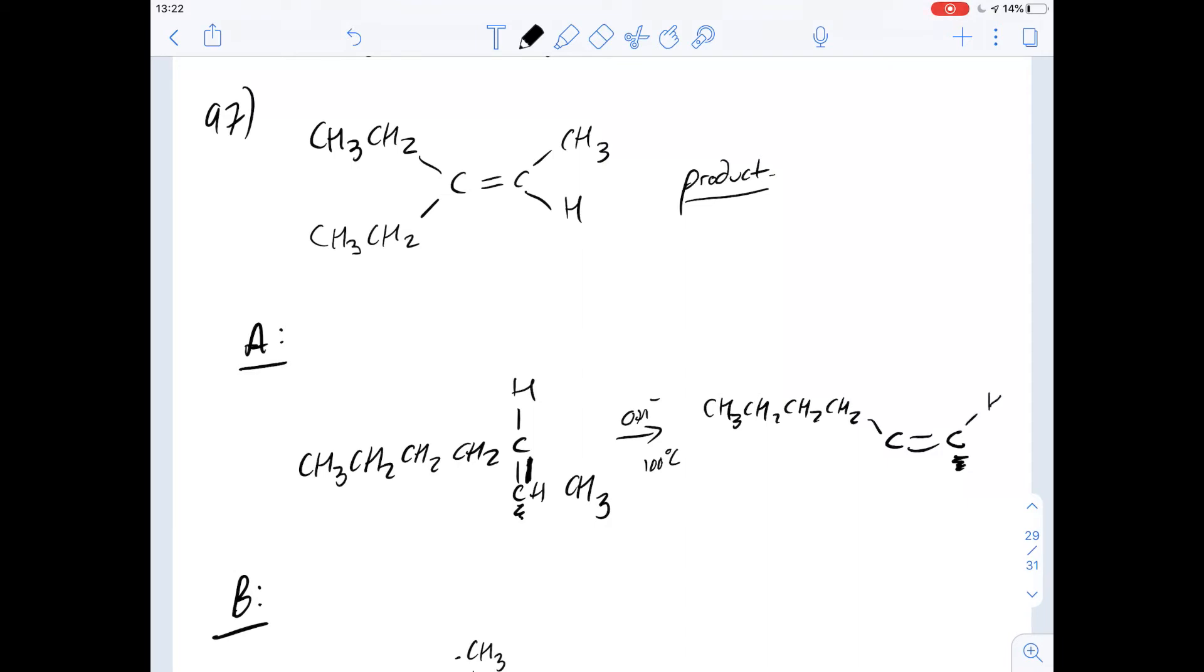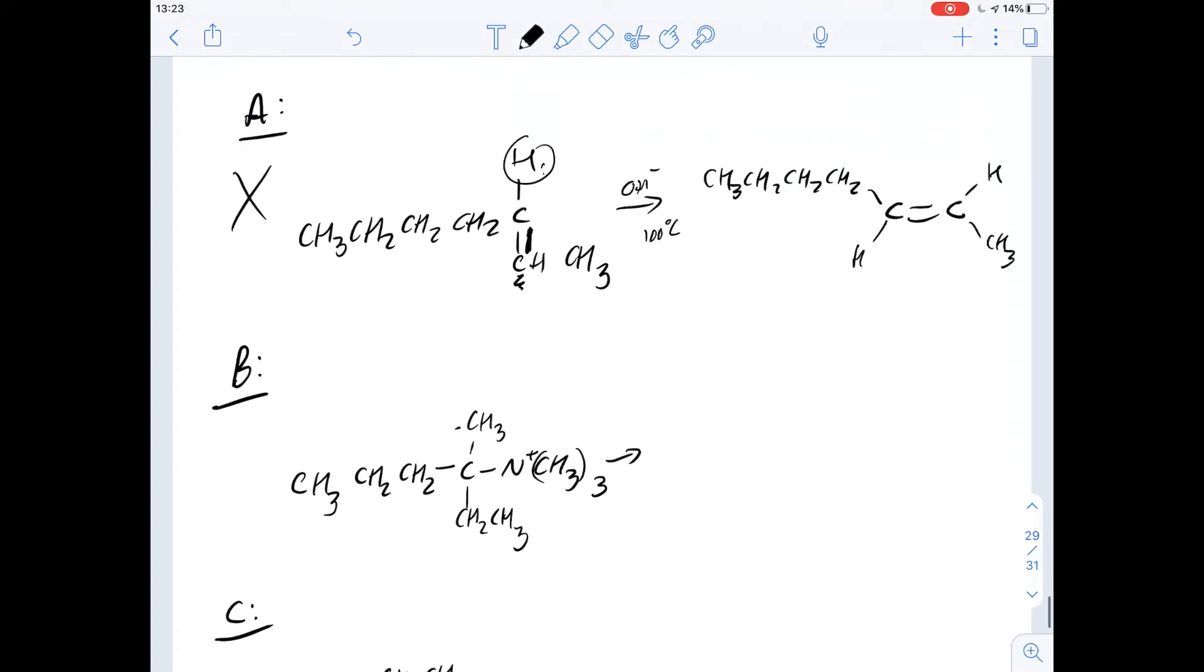So let's draw in that carbon. Remember, this carbon here is the same as this carbon here, and we've got CH and then a CH3 group, and we've got our hydrogen, which is this one here, over here. These hydrogens are the same. So that would be the product that would be produced as the major product of this reaction, which is different to the one that was given, so it's not going to be A.